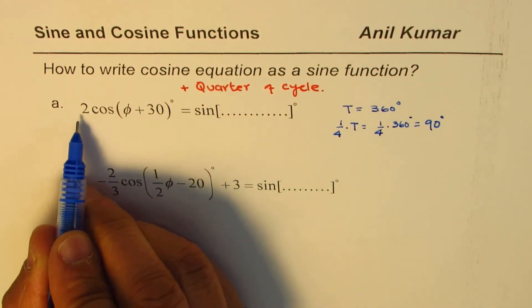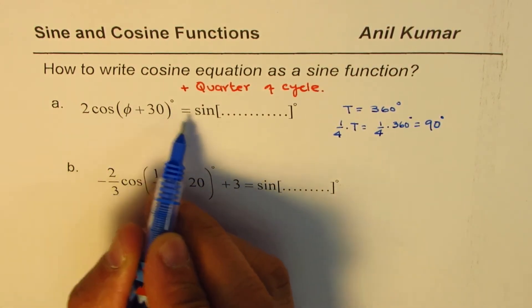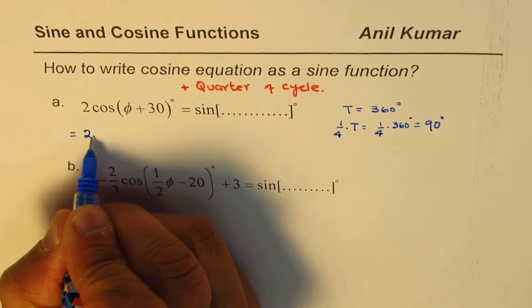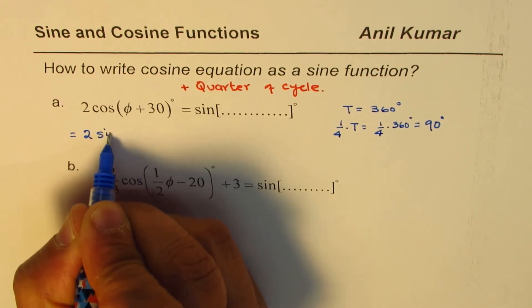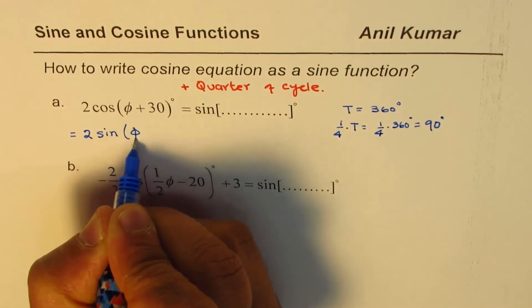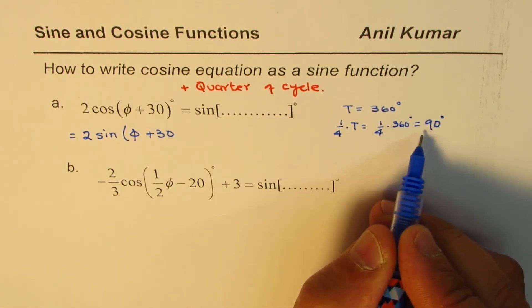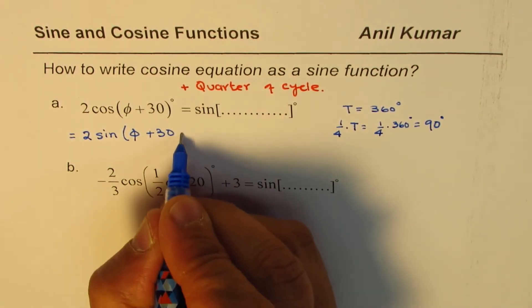So to write 2 cos(φ + 30°) in sine we could write this as amplitude remains same which is 2, and then we have sine(φ + 30°) add this quarter of the time period which is 90.